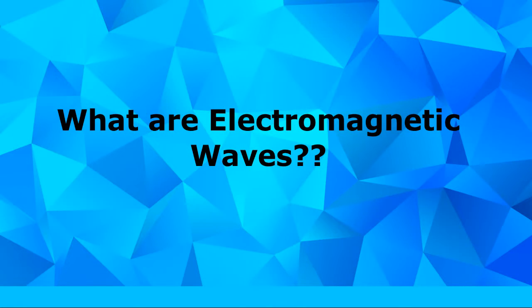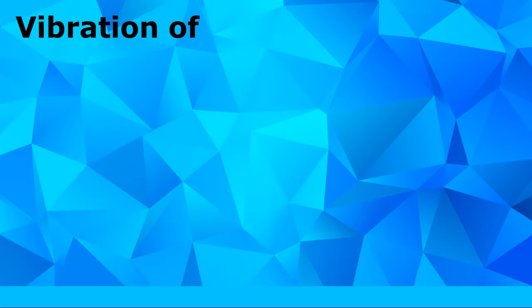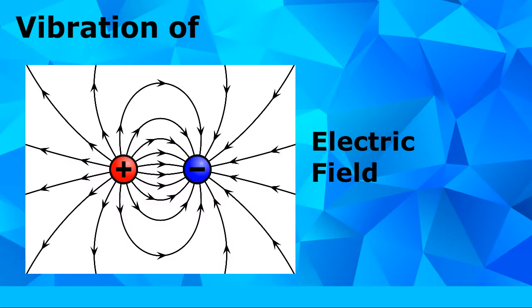What are electromagnetic rays? Electromagnetic rays, also known as EM rays, are produced due to the vibration of electric and magnetic fields.